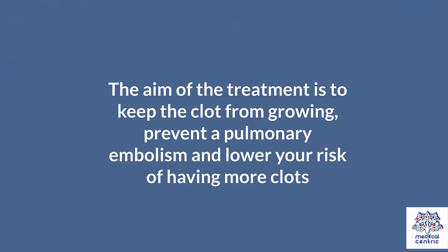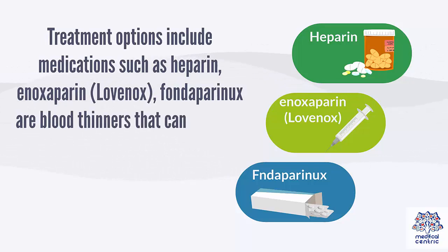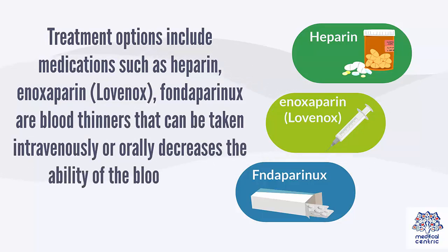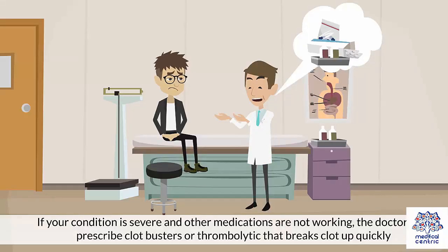Treatment. The aim of treatment is to keep the clot from growing, prevent pulmonary embolism, and lower your risk of having more clots. Treatment options include medications such as heparin, enoxaparin, or lovenox. Fondaparinux are blood thinners that can be taken intravenously or orally, decreasing the ability of the blood to clot. If your condition is severe and other medications are not working, the doctor may prescribe clot busters or thrombolytics that break the clot up quickly.